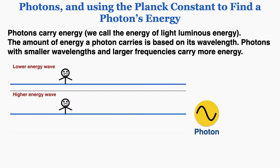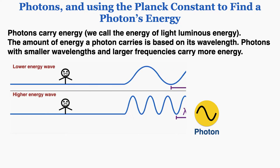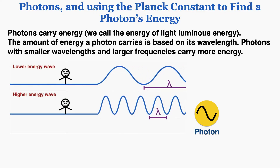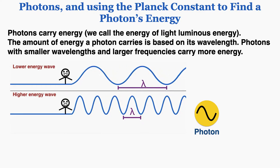Imagine standing in the ocean. If the amplitude of the waves are equal, would you rather be hit by a wave with a long wavelength and small frequency, or a short wavelength at a high frequency? It becomes pretty clear that the wave with the smaller wavelength is going to be much more painful, because it's delivering a lot more energy in the same amount of time. So in the same way, photons with smaller wavelengths and higher frequencies deliver more energy than longer wavelength photons.